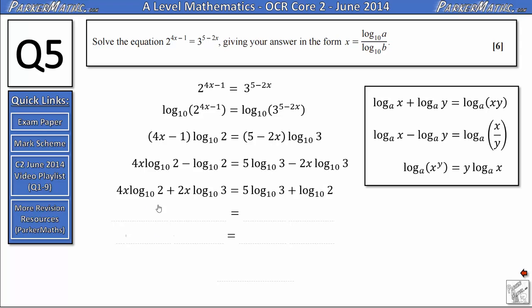At this stage, I'm unable to combine these two logs into a single log. If it was just log 2 plus log 3, I could make it log 6. But because there's a 2x here and a 4x here, I've got a little bit of difficulty doing that at the moment.